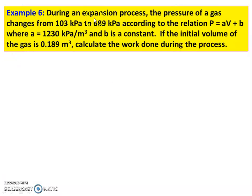Example number 6. During an expansion process, pressure of the gas changes from 103 kPa to 689 kPa according to the relation P equal to AV plus B, where A is 1230 kPa per m³ and B is a constant. If the initial volume of the gas is 0.189 m³, calculate the work done during the process.